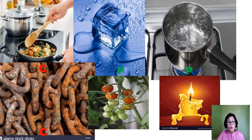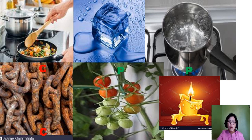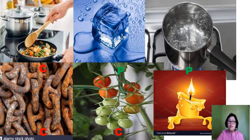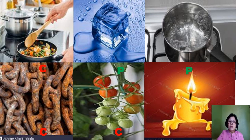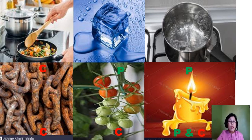What about the ripening of fruits? That's a chemical change because you cannot bring back the original form of the fruit and a new substance is formed. Now look at the last picture — melting of wax. This is both a physical and a chemical change. The melting of the wax is a physical change, while the burning of the wick is a chemical change, because burning produces carbon dioxide and water vapor.